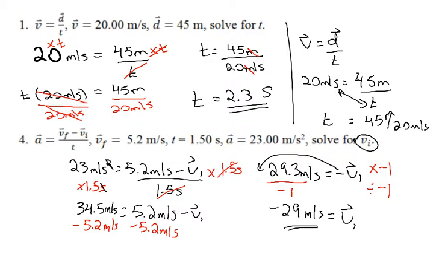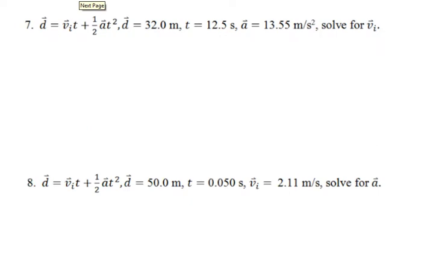So there's number one and number four. I want to show you two more here. Here's a little bit more complicated of a formula. But again, I'm going to substitute in, including my units. I've got the displacement, I'm looking for the initial velocity, I'm told the time which is 12.5 seconds,